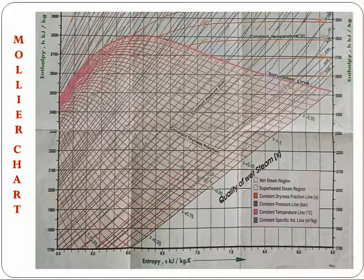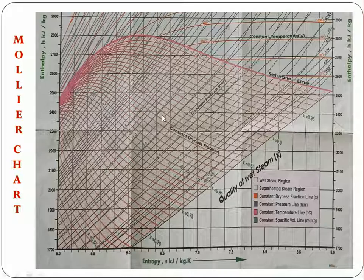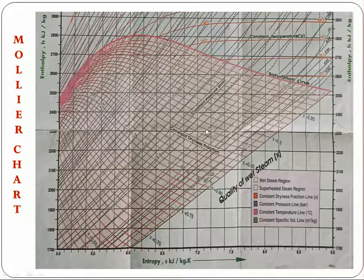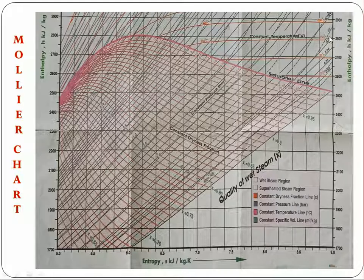It is also showing that there are constant dryness fraction lines. As I already discussed in our previous lecture, dryness fraction is the quantity or amount of moisture present in the steam. These dark pink lines are the constant dryness fraction lines. The value of dryness fraction varies from 0 to 1 — the maximum value is 1. Here its value goes from 0.7, 0.75, 0.8, 0.81, 0.82, 0.83, 0.84, 0.85. Inside the saturation line, the steam has moisture — so it is wet steam. It tells about how much amount of moisture is present. However, above this line, we have totally dry steam — that is the superheated steam.